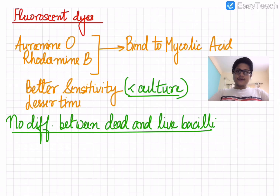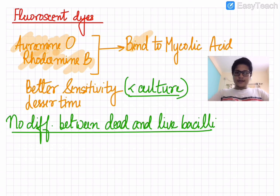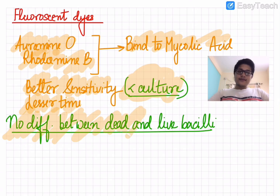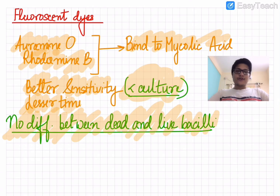In place of acid fast staining, we can also use fluorescent dyes such as Auramine O or Rhodamine B, which bind to the mycolic acid. Fluorescent dye examination has better sensitivity than acid fast staining, though less than sputum culture, which is the gold standard. It can be done in less time. However, an important disadvantage is that it offers no distinction between dead and live bacilli.